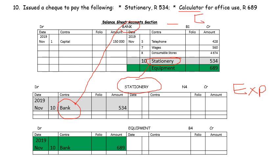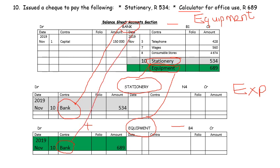Also on the 10th, a calculator cannot be used up, so a calculator cannot be stationery — a calculator will be equipment. Any possession of the business that cannot be used up is called an asset, and calculators, cash registers, printers, and computers are all equipment. Spending money again, so bank will decrease. You write equipment inside the bank account because that is what you are spending the money on. Equipment is an asset — increases on the debit side. If you buy equipment, your equipment will obviously increase. Inside equipment, you write bank because that is where the money came from. Double entry principle has been applied — every debit has a credit.